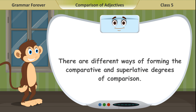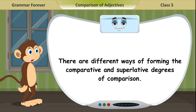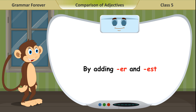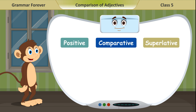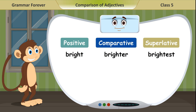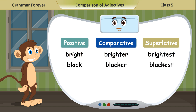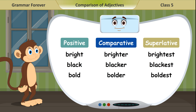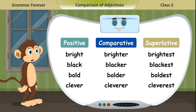There are different ways of forming the comparative and superlative degrees of comparison. By adding -ER and -EST: Bright, brighter, brightest. Black, blacker, blackest. Bold, bolder, boldest. Clever, cleverer, cleverest.